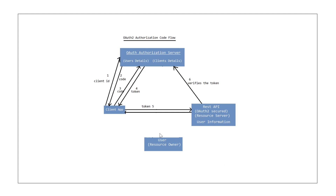So this is how the user gets access to this client application. Instead of creating a new account in this client application, the user just authorizes the client application to make use of some of its details to log in. This is how the OAuth2 authorization code flow works.